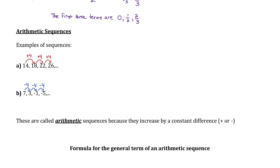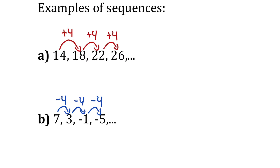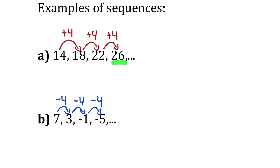Arithmetic sequences increase or decrease by a constant difference. If you take any pair of values in the sequence and do the second one minus the first one — for example, 18 minus 14 — you get 4. That would be the same difference for any pair of numbers in this sequence: 22 minus 18 is 4, and 26 minus 22 is 4. For the second sequence, 3 minus 7 is negative 4, and so on.